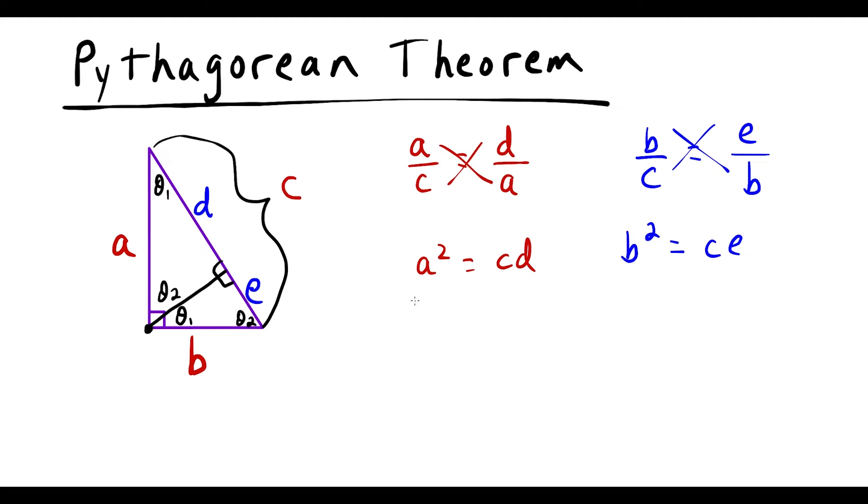So I'm going to have a squared plus b squared. I'm going to add the left side. So I have a squared plus b squared. And that's going to be equal to the sum of the right side. So I'd have c times d plus c times e. But notice we could factor out c and this is going to leave us with d plus e.